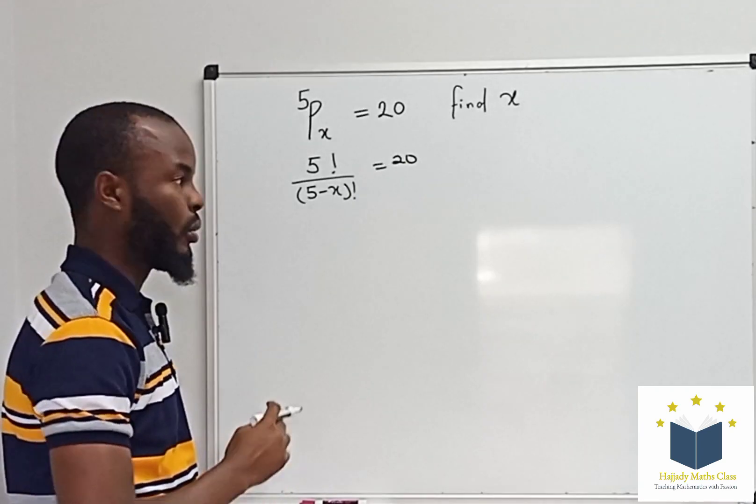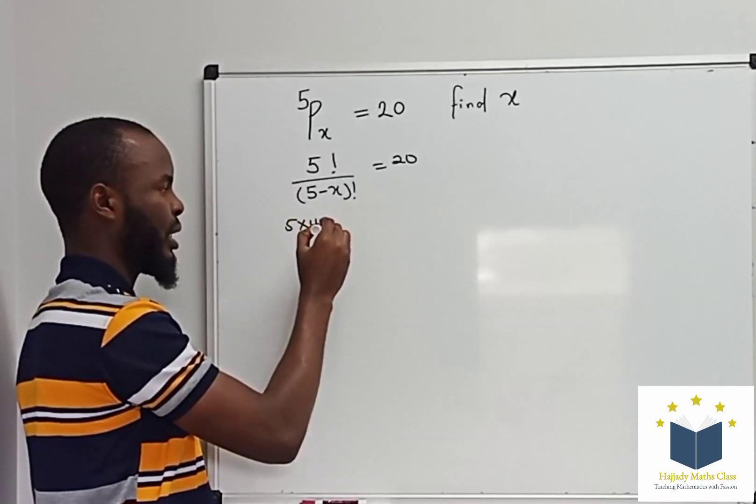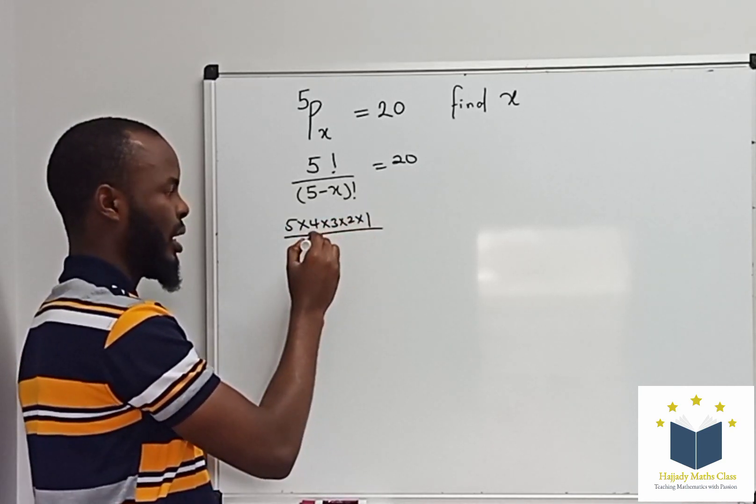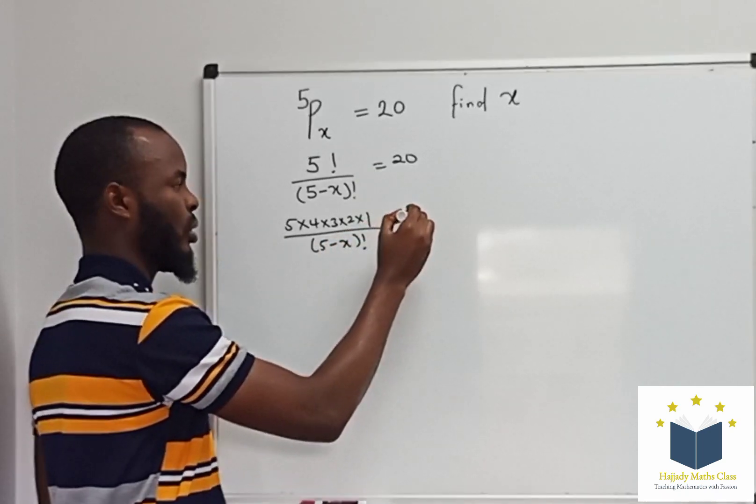So, writing 5 factorial is the same thing as saying 5 times 4 times 3 times 2 times 1 over 5 minus x factorial equals 20.